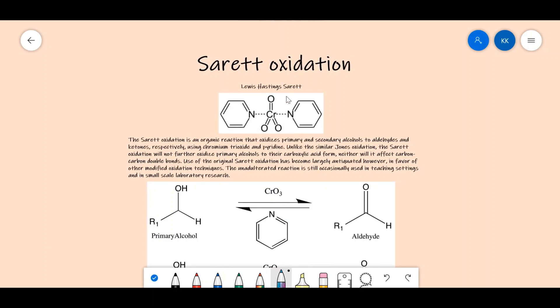You can see we have a chromium trioxide molecule which is linked to two pyridine rings. The Sarett oxidation is an organic reaction that oxidizes primary and secondary alcohols to aldehydes and ketones respectively, using chromium trioxide and pyridine.